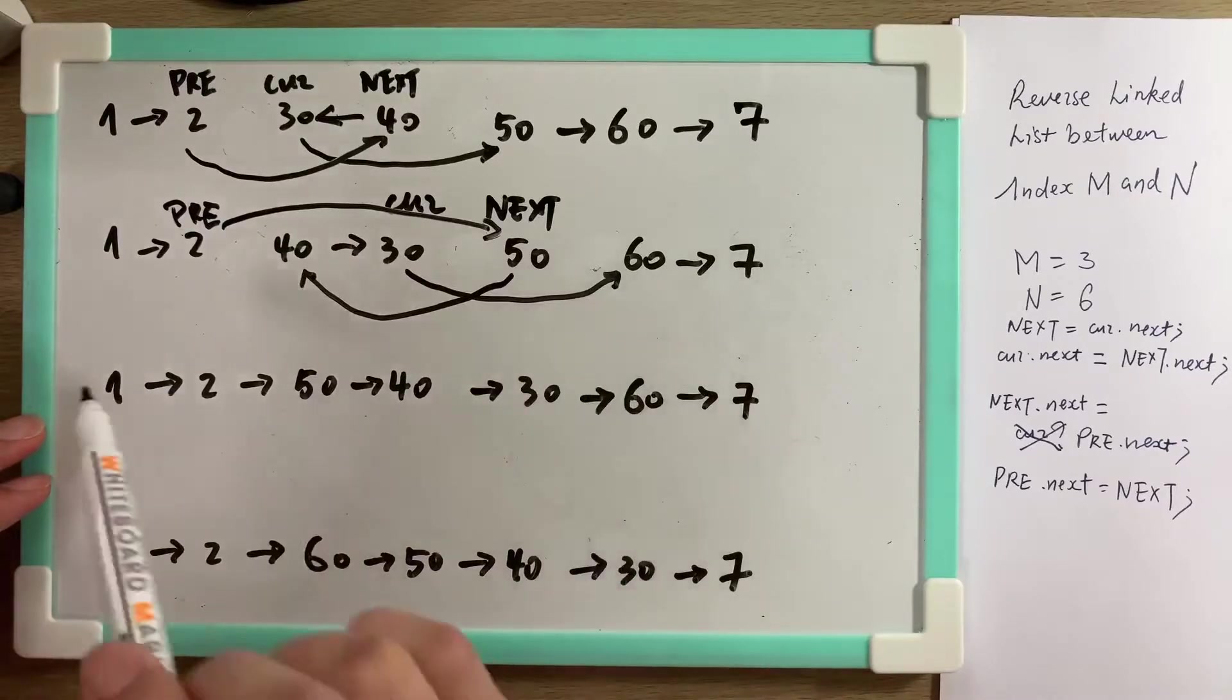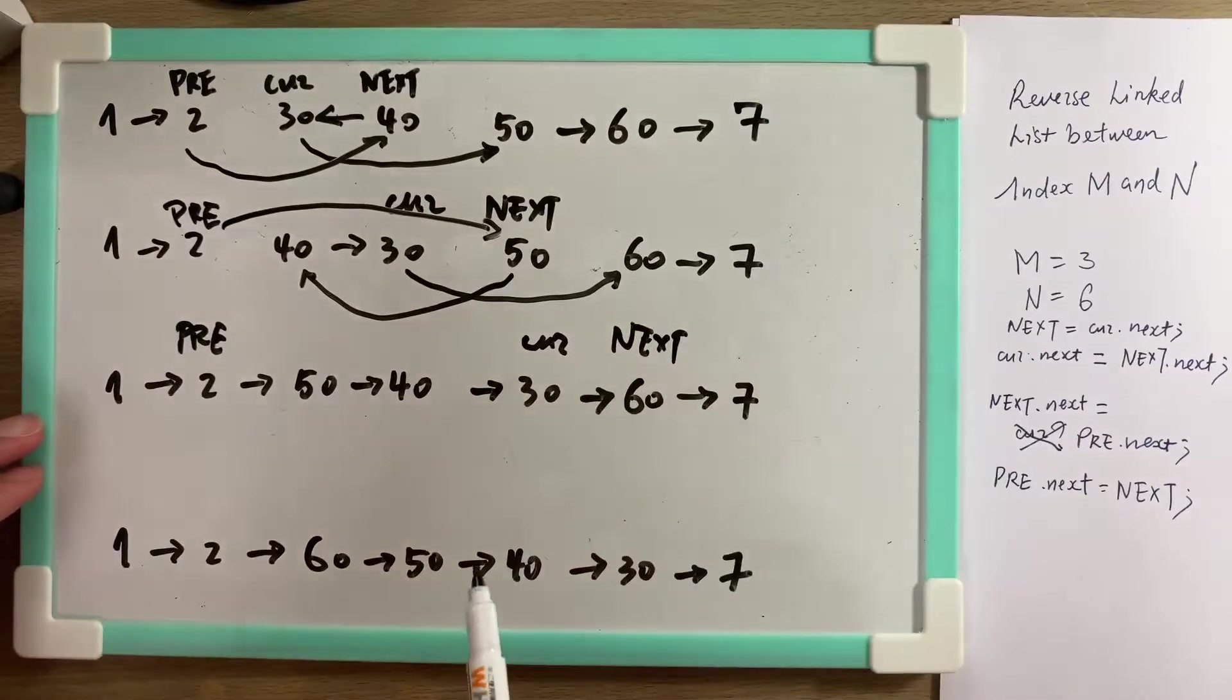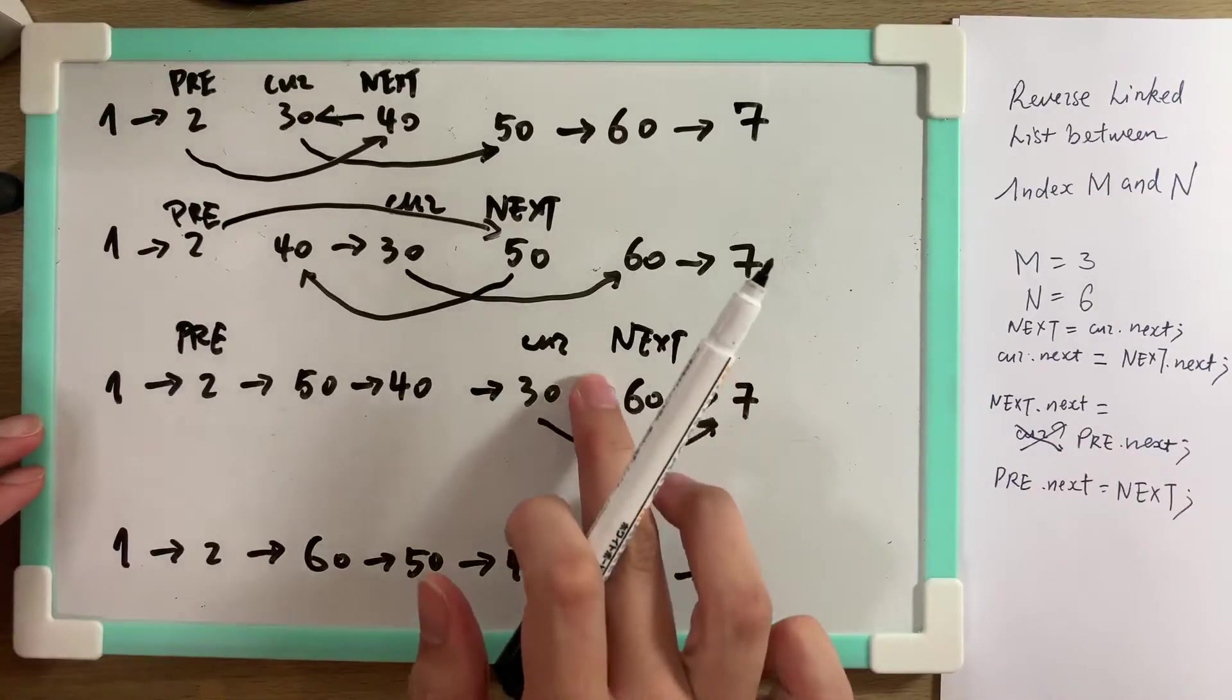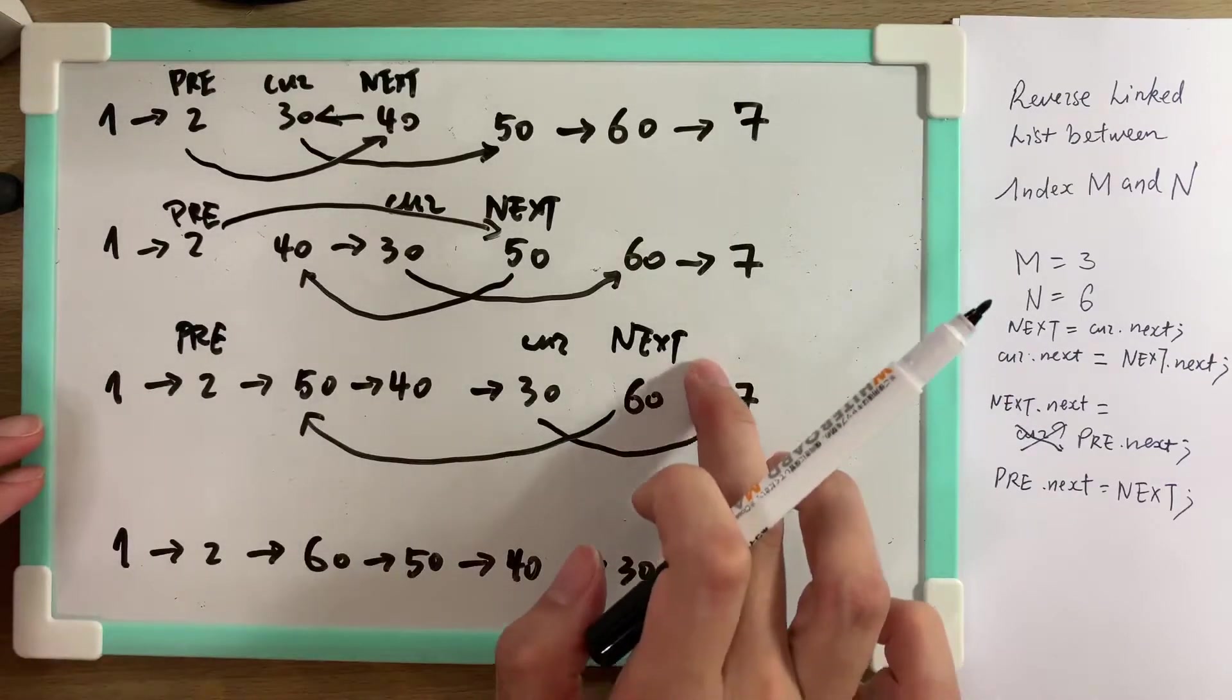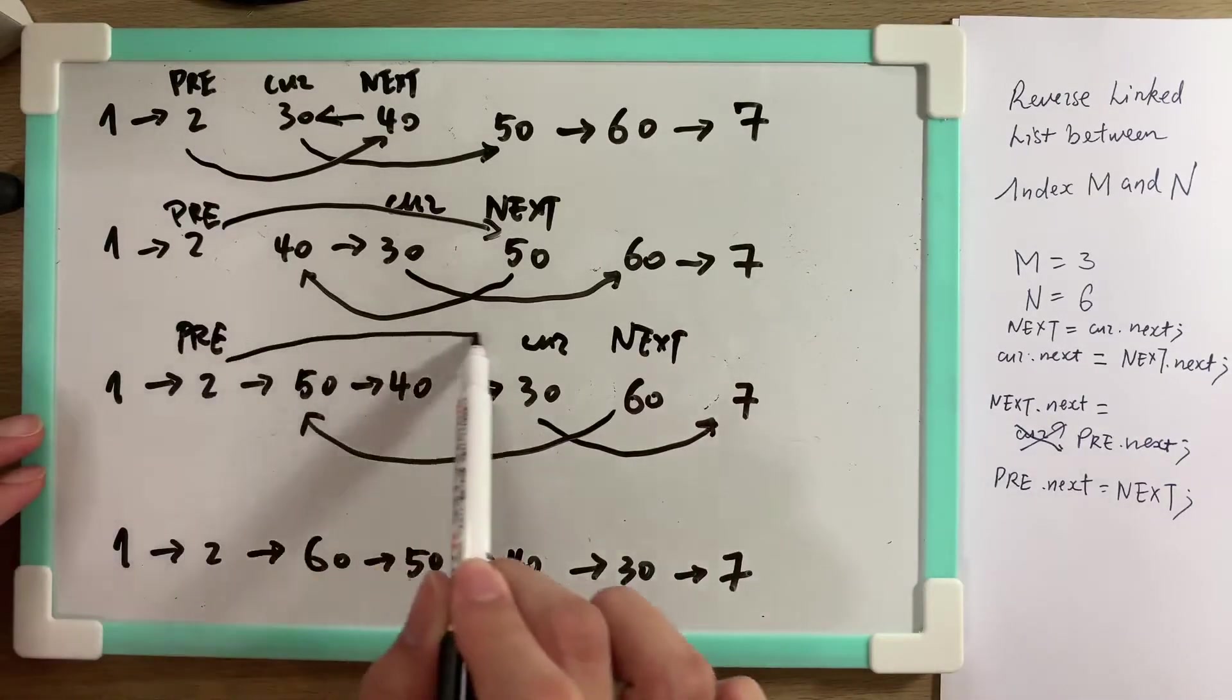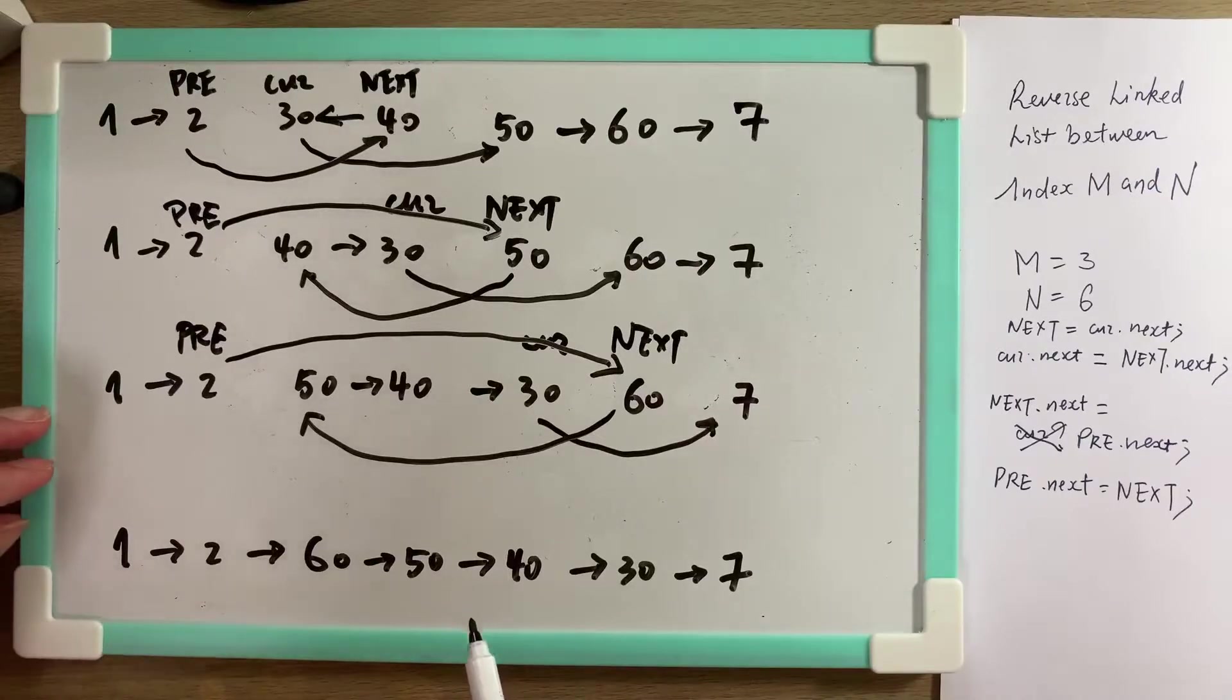When we reach here, this is still pre. What is our current? This is still our current. The next is always the current's next. Same thing. Current.next equals to next.next. So this error is gone. Next.next equals to pre.next. So this is pre.next. So you draw an error here. So this is gone. Then pre.next equals to next. So this is gone. So 1 to 2 to 60, 2 to 50, 2 to 40, to 30, to 7. And we do it for 3 times because 3 is n minus m.